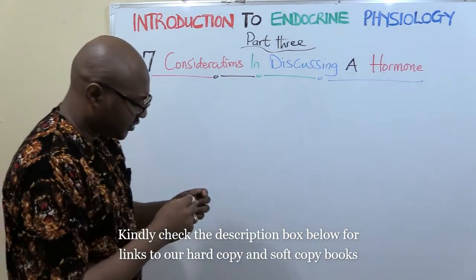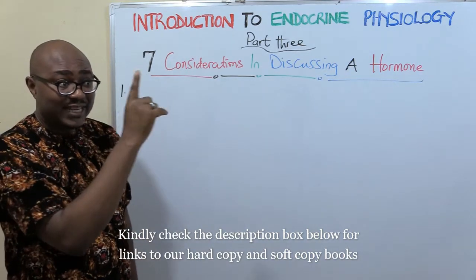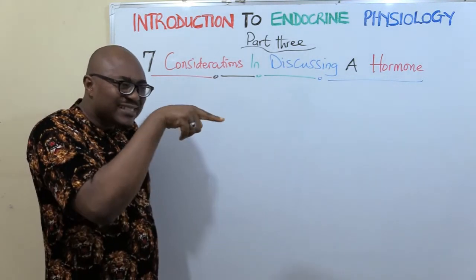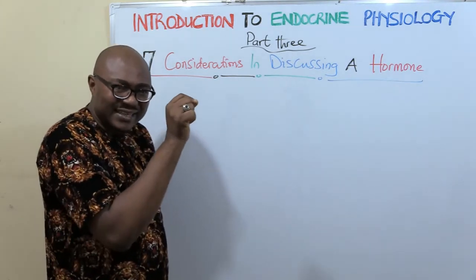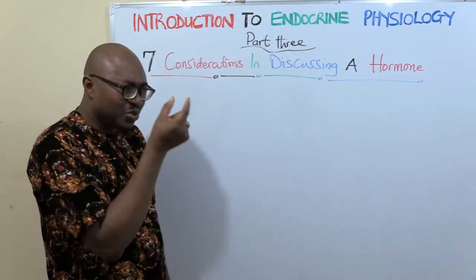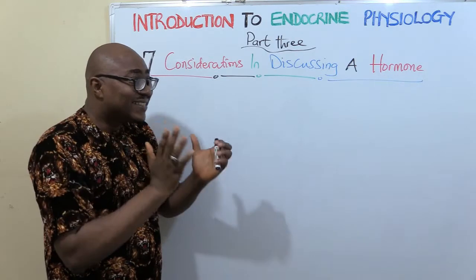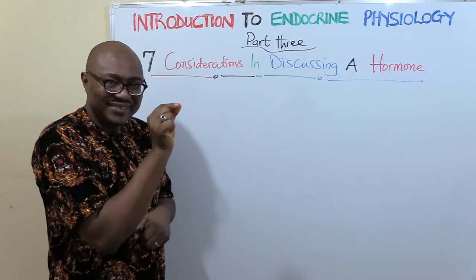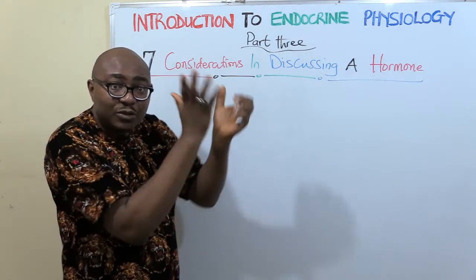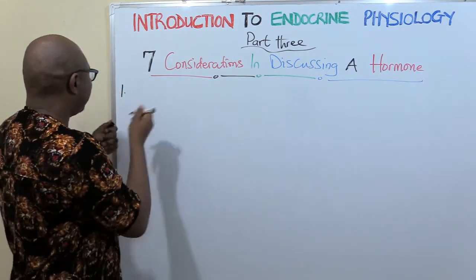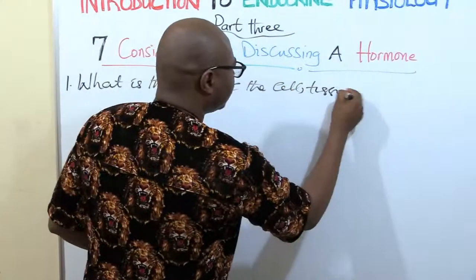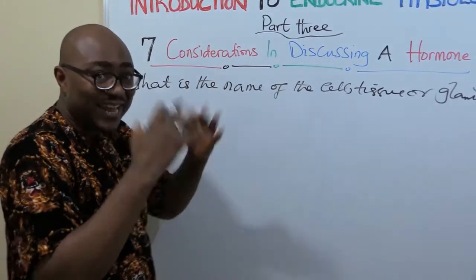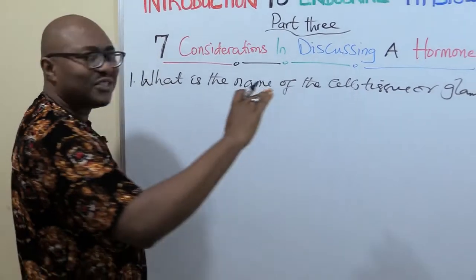Number one of the seven considerations: logically, start from the very first thing. Especially these classical hormones — they all have glands. So you ask yourself, what is the cell involved in secreting this hormone? We need to know the name. Some of them have special names. For example, the cells that secrete growth hormone are called somatotropes in the pituitary gland. The cells that secrete prolactin are called lactotropes. You need to know and mention the name of the cell. Thyroid has thyroid follicular cells, and so on and so forth.